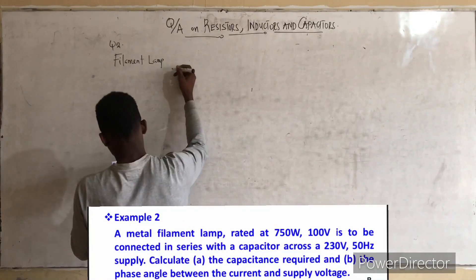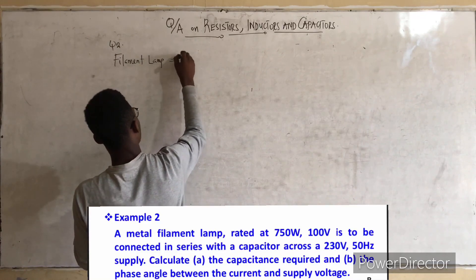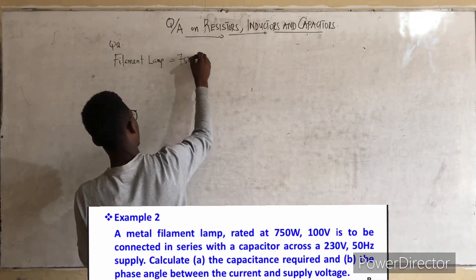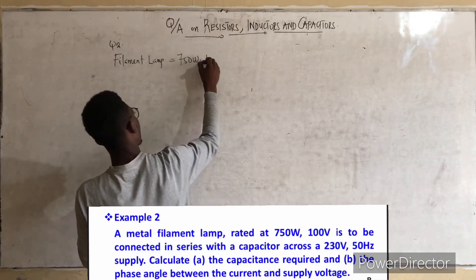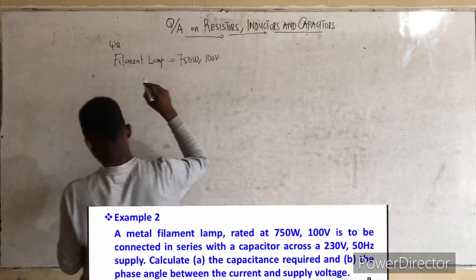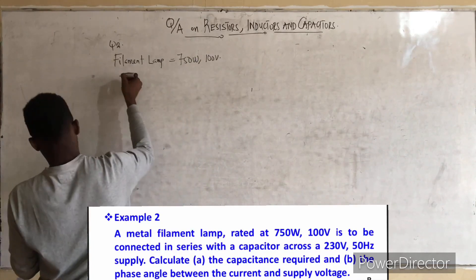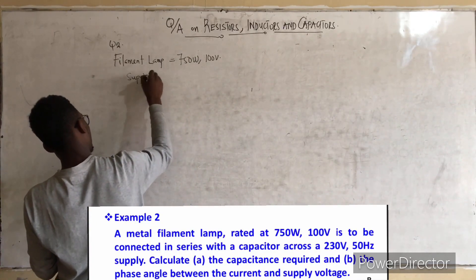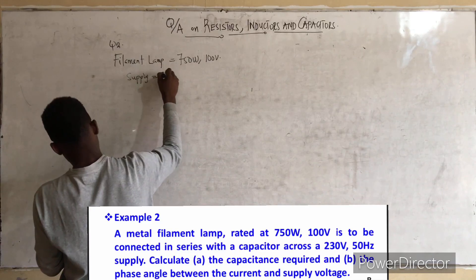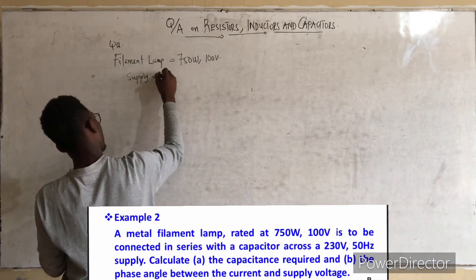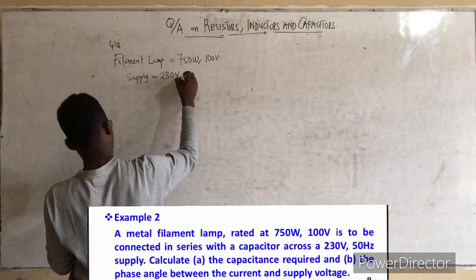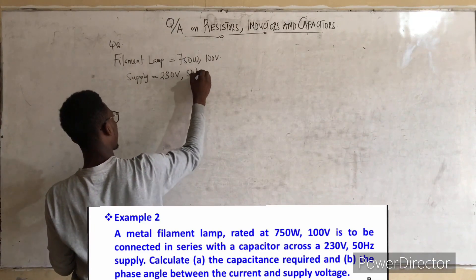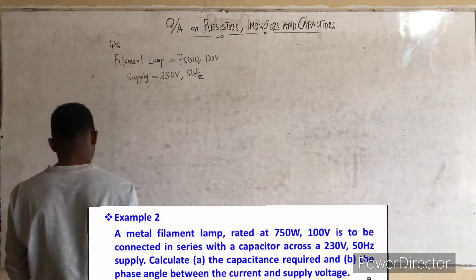Now let's take the second question. A metal filament lamp rated at 750 watts, 100 volts is to be connected in series with a capacitor across a 230 volt, 50 Hz supply. Calculate: (a) the capacitance required, and (b) the phase angle between the current and the supply voltage.